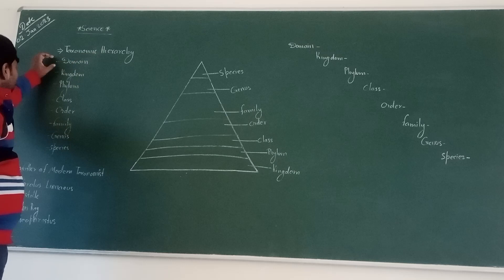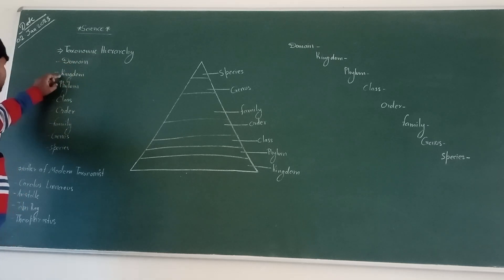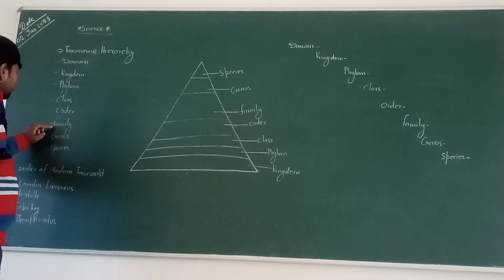The taxonomic hierarchy includes domain, kingdom, phylum, class, order, family, genus, and species.